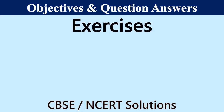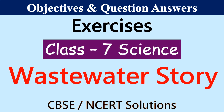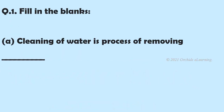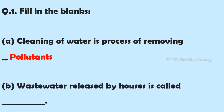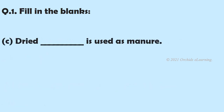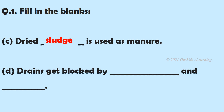Objectives and question answers of the lesson 'Wastewater Story', Class 7 Science. Fill-in-the-blanks: Cleaning of water is the process of removing pollutants. Wastewater released by houses is called sewage. Dried sludge is used as manure. Drains get blocked by chemicals and kitchen waste.